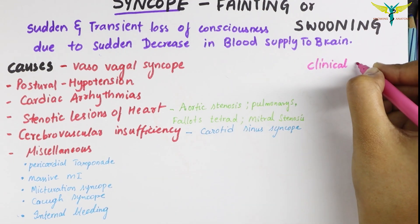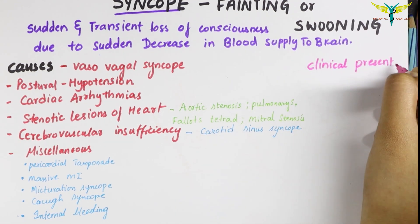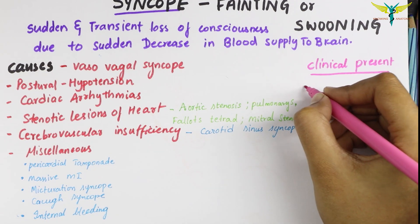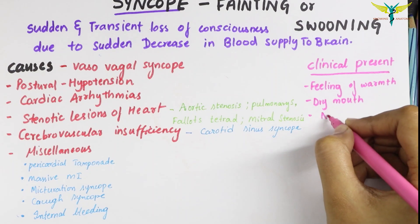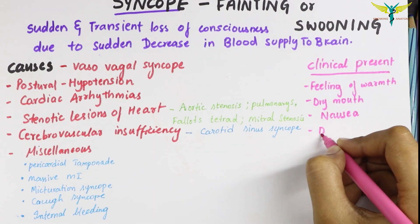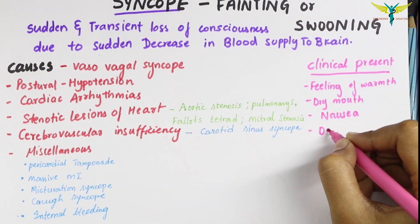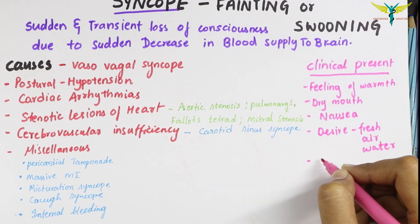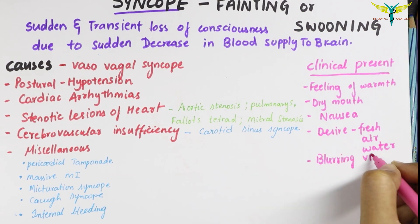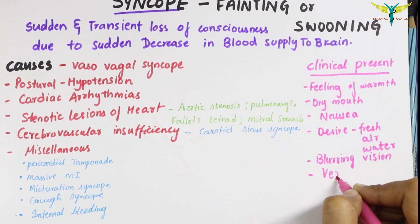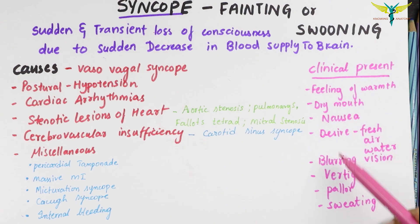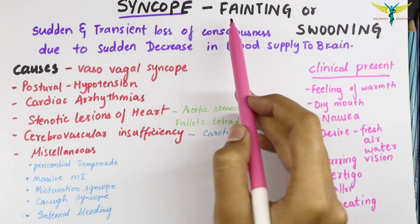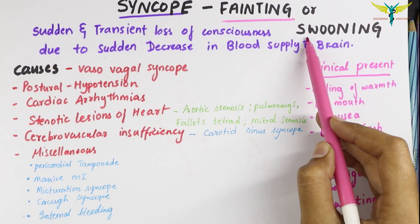The clinical presentation of syncope includes feeling of warmth, dry mouth, nausea, desire for fresh air and water, blurring of vision, vertigo, pallor, and sweating.